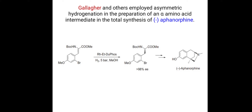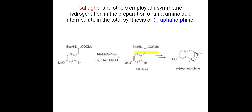This intermediate undergoes further reactions to give minus-ephanorphine. This first reaction is important because there is formation of a chiral center using the rhodium ethyl DUPHOS complex as a catalyst via the asymmetric hydrogenation reaction.